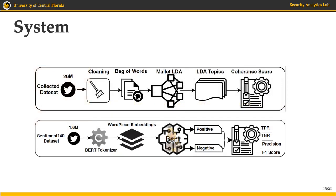Here we can see the pipelines for the main tasks. The first one involves retrieving the entire dataset of 26 million tweets, performing cleaning, then using Bag of Words to transform tweets into numerical representations in order to apply Mallet LDA on them, extract a set of topics, and for each extracted set of topics calculate the coherence score in order to get the best result possible.